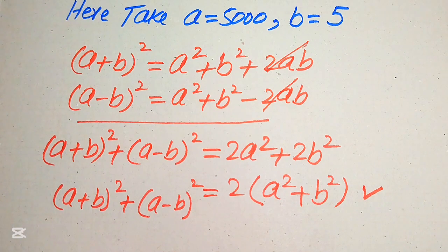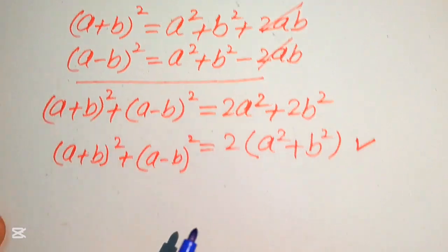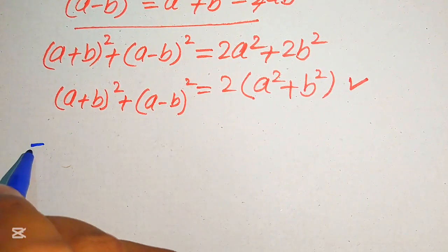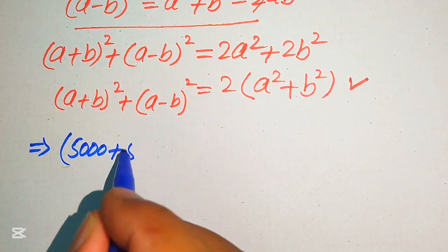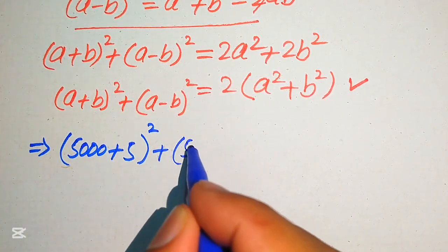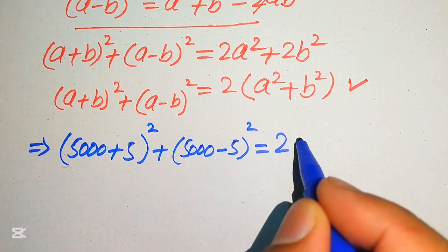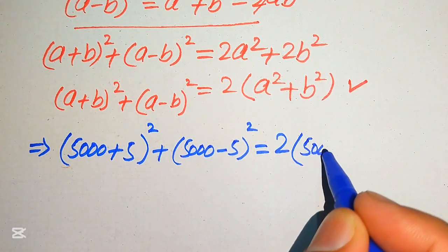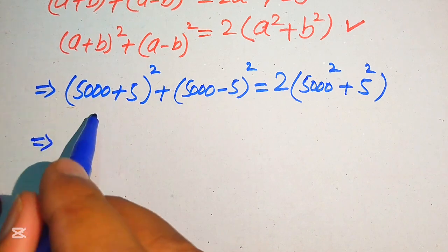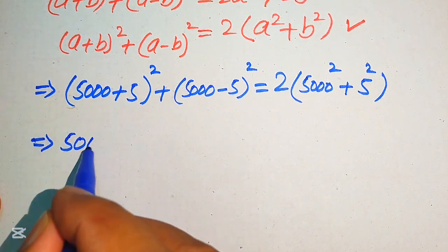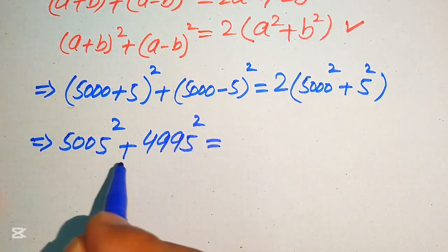According to this formula, we substitute a = 5000 and b = 5. So (5000 + 5)² + (5000 − 5)² = 2(5000² + 5²). Simplifying the left-hand side gives us 5005² + 4995², which is exactly our question statement.